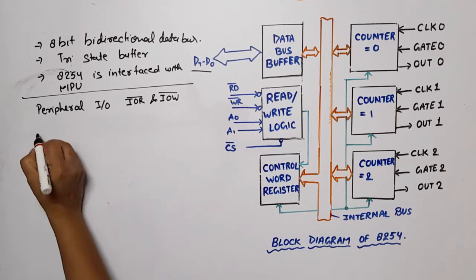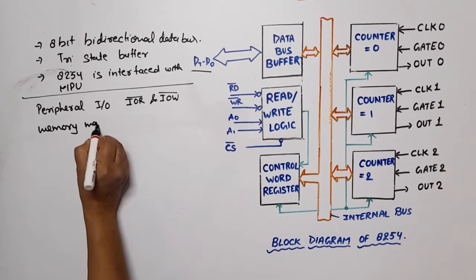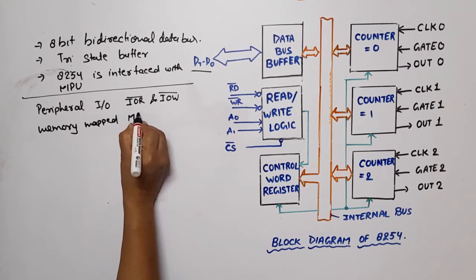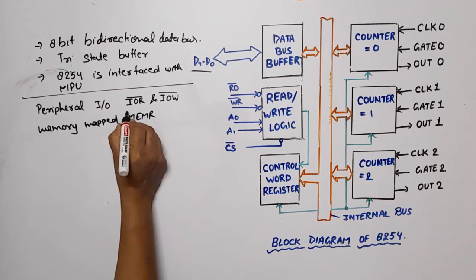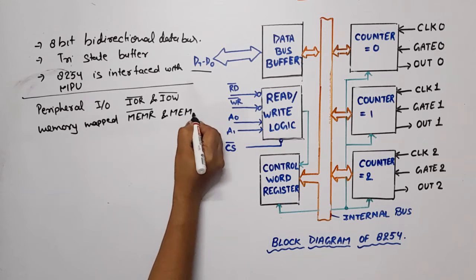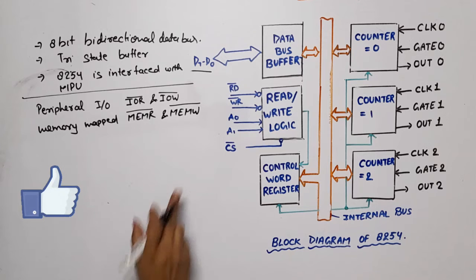then read bar and write bar will be connected with IOR bar and IOW bar. If microprocessor is memory mapped, then these signals will be connected with MEMR bar and MEMW bar for read operation, write operation.